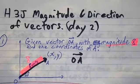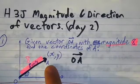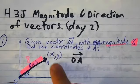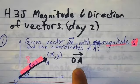Okay, so here's an example. We're given a vector OA with the magnitude of A, and we want to find the coordinates of A. So we've got vector OA.